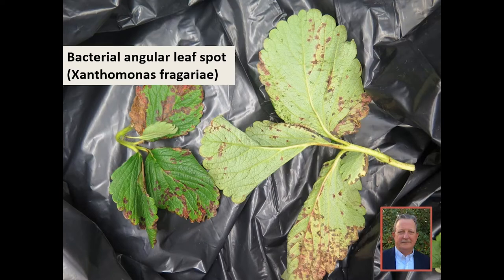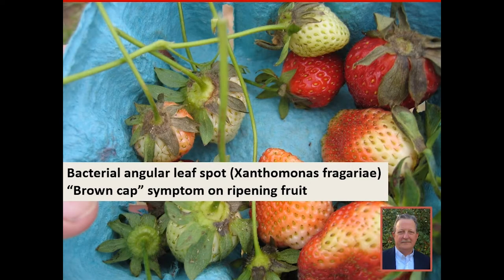Another disease not yet covered in this series is bacterial angular leaf spot, caused by Xanthomonas fragariae. It's a bacterial pathogen that causes angular spots on the leaves — not round like fungal spots, but angular and delimited by the veins in the leaf. The most worrisome symptom is brown cap on ripening fruit. The bacteria can infect the sepals of the flower — that green cap on the fruit — making the fruit unmarketable once the cap turns brown, which looks like old or defective fruit.